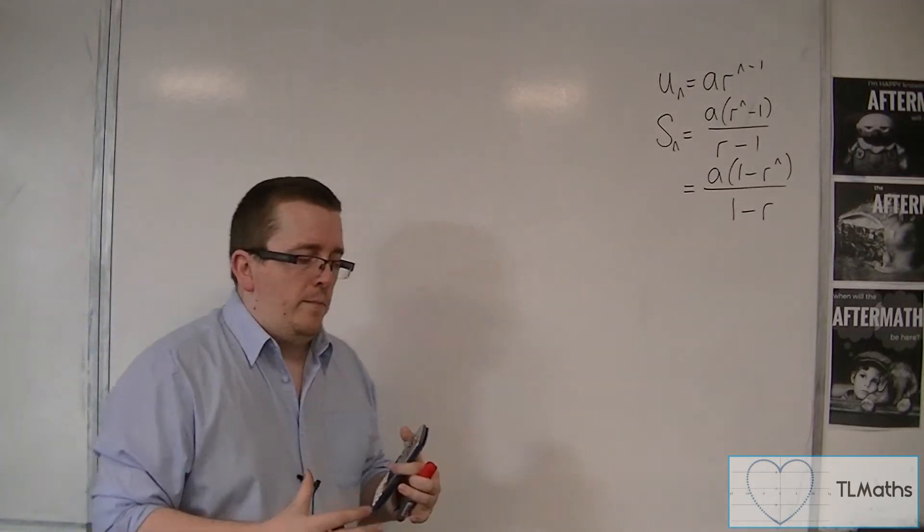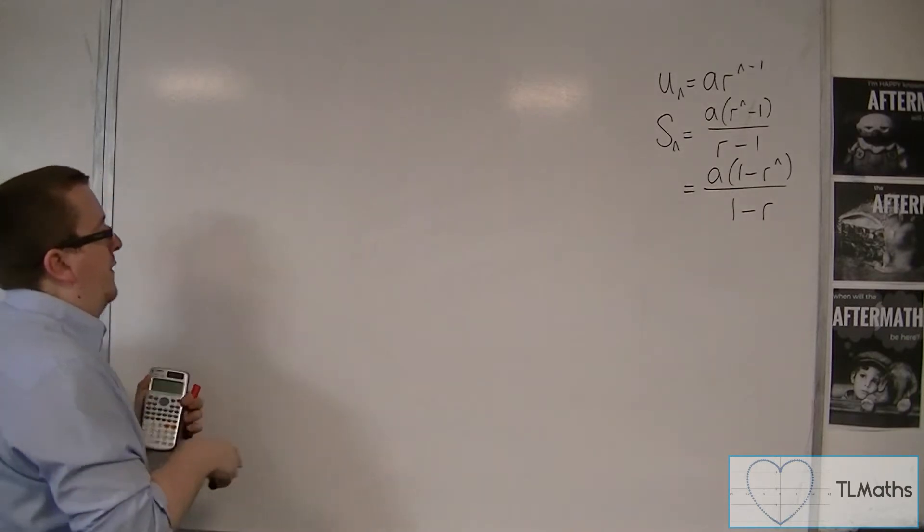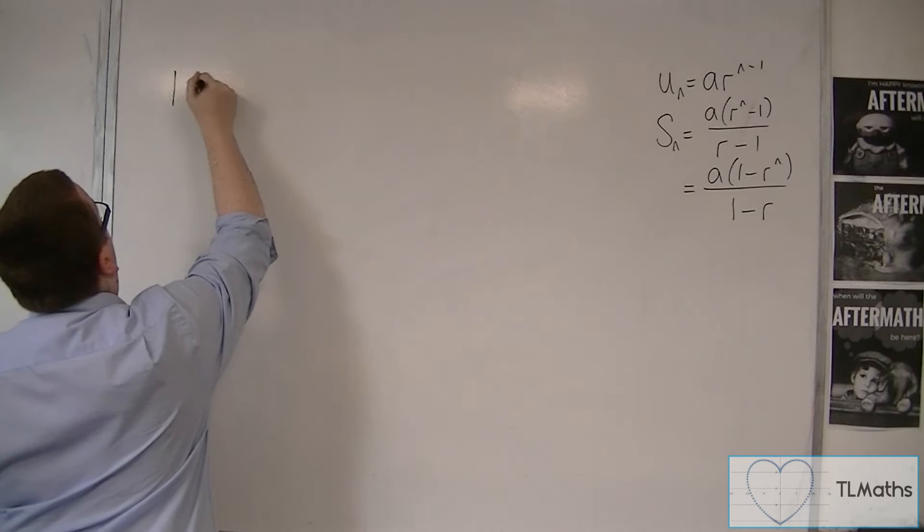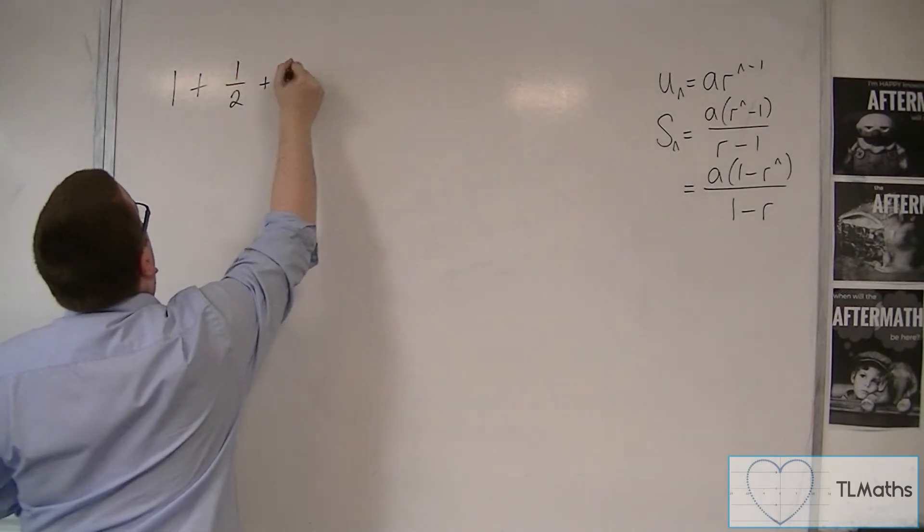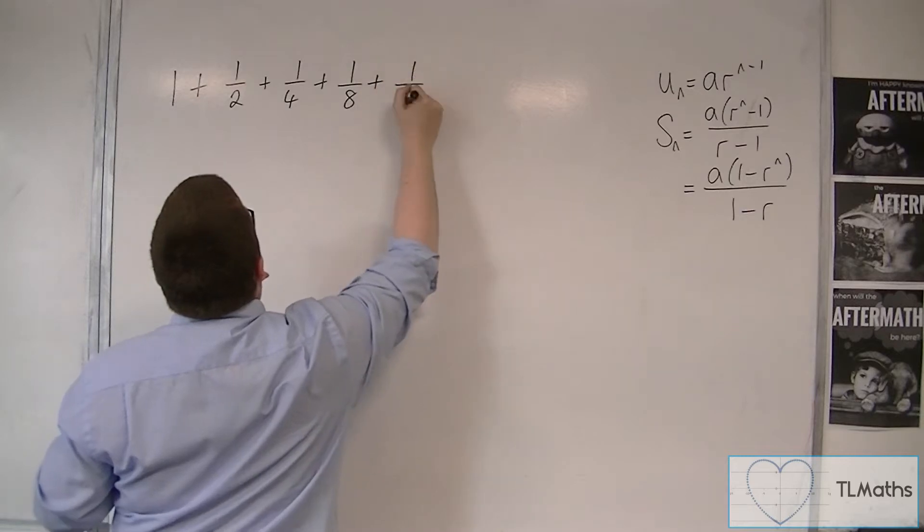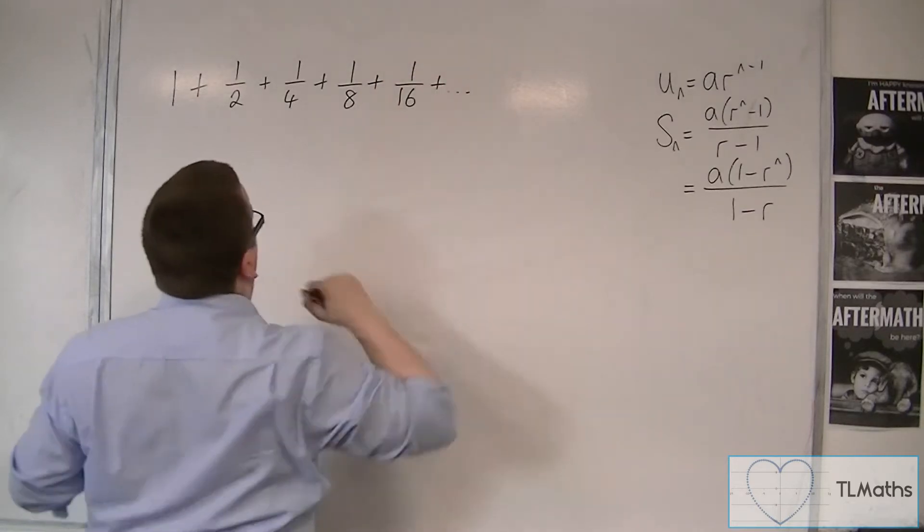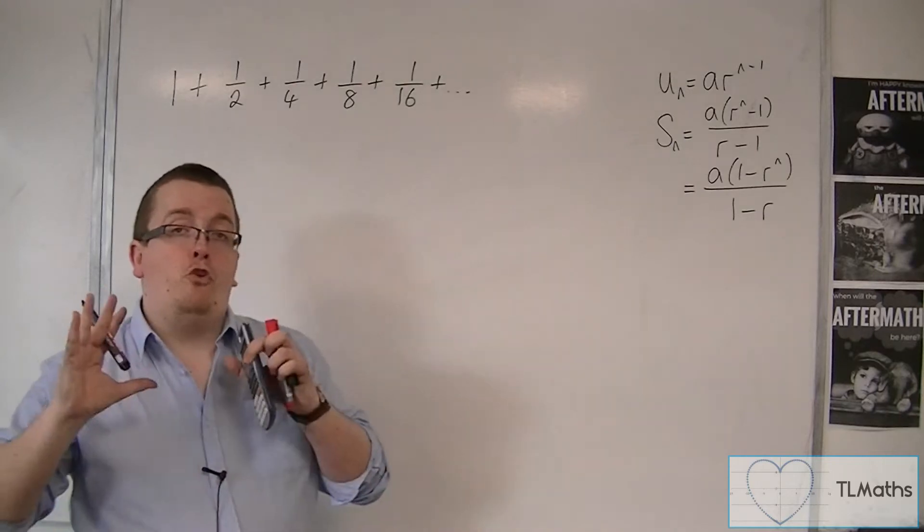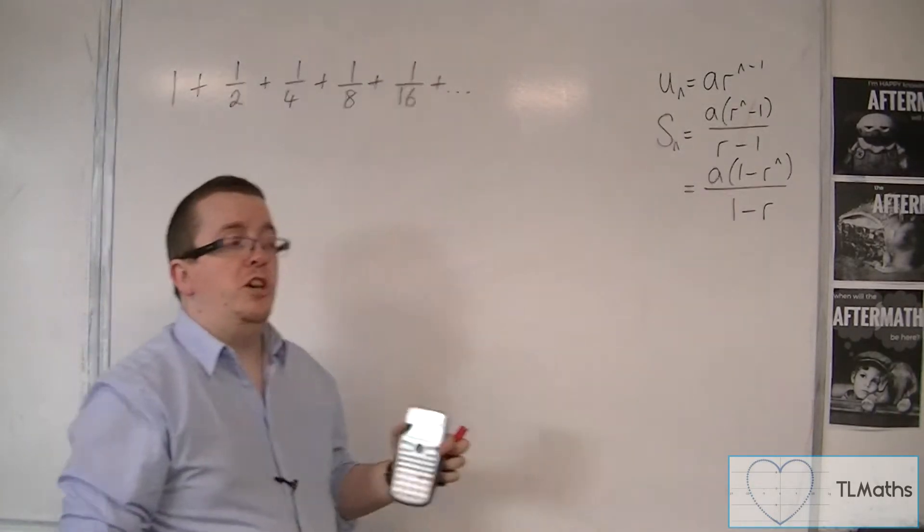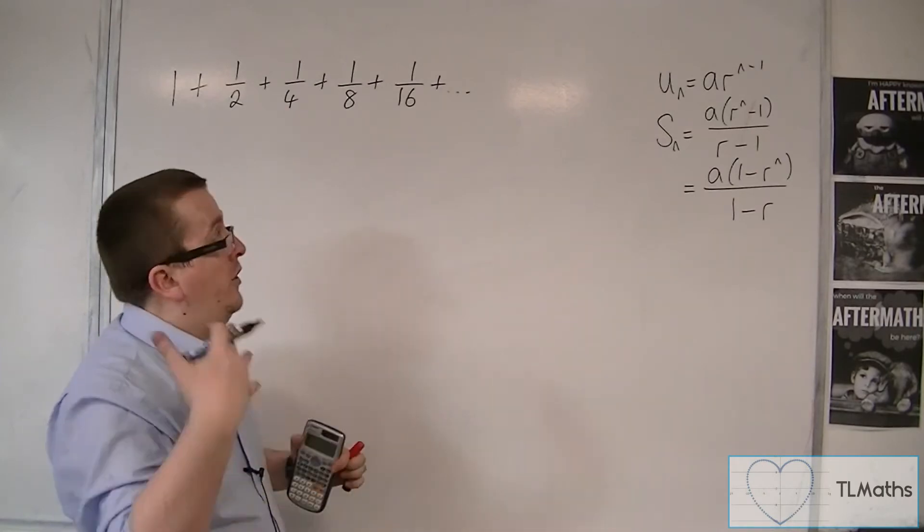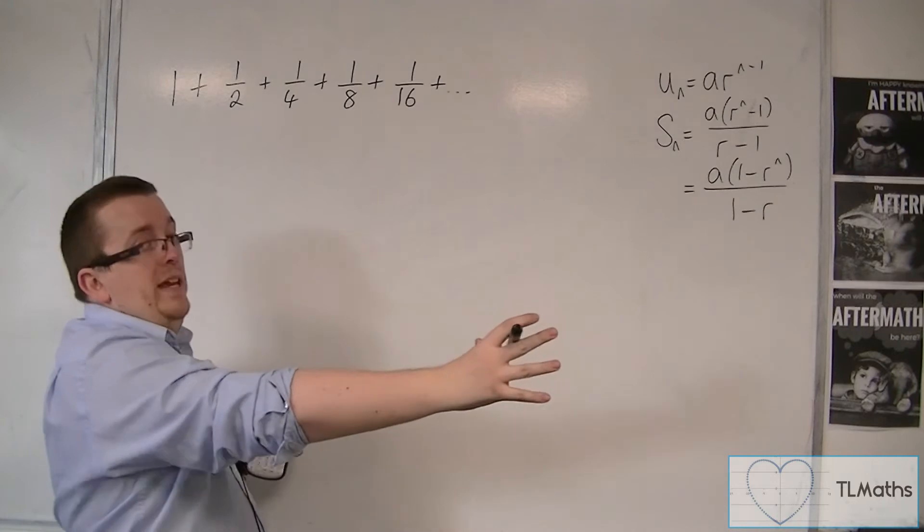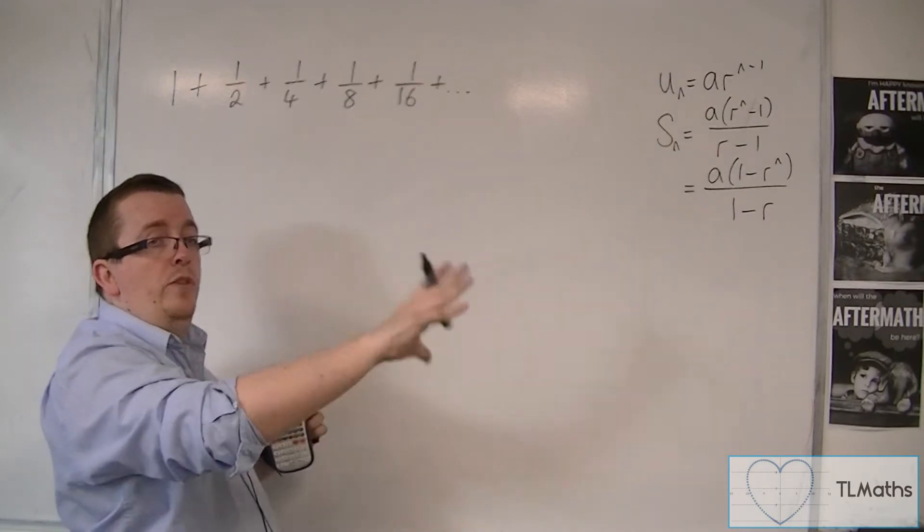So what I mean by this is that you could have a series that looked something like this. You could have 1 plus a half plus a quarter plus an eighth plus a sixteenth plus etc. And we go on forever. And there are an infinite number of terms. And each time I get from one term to the next, I'm halving it each time. And then I add all of them together, and I will come up with a finite value.